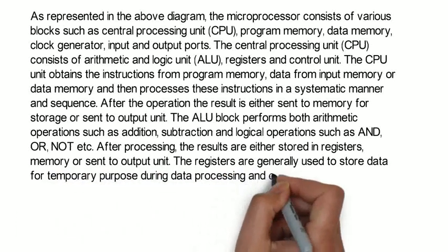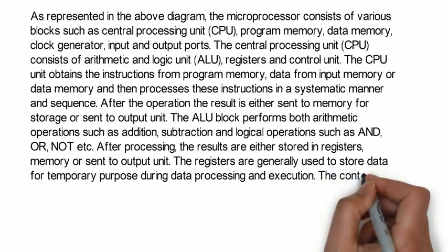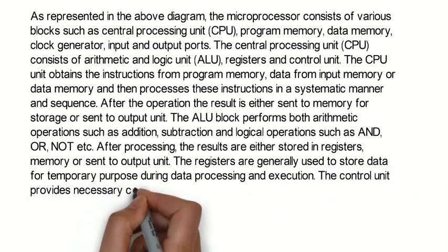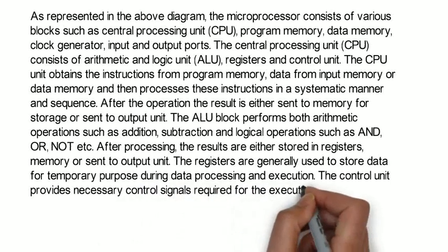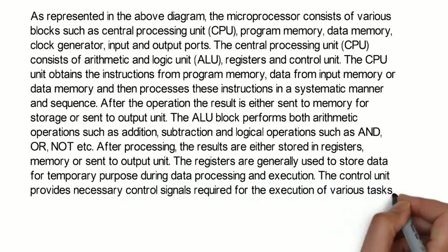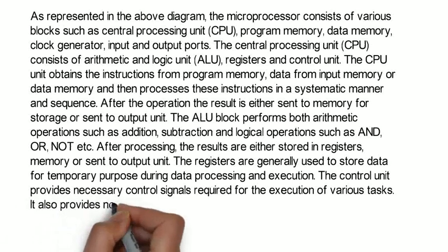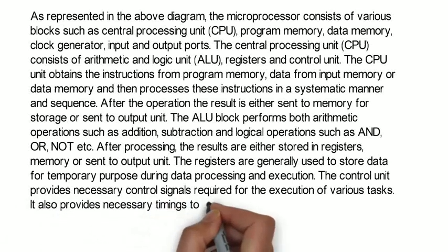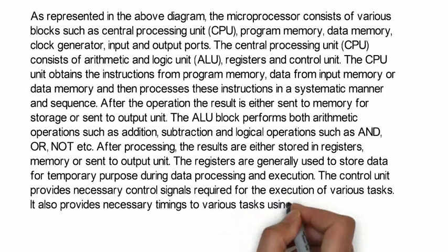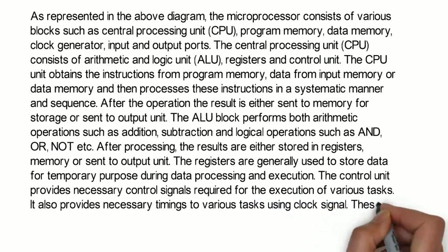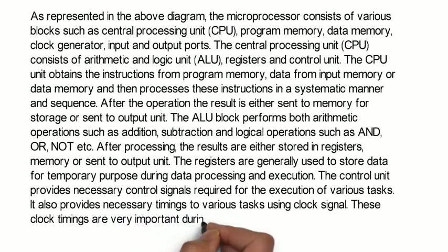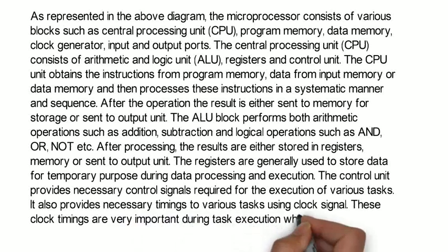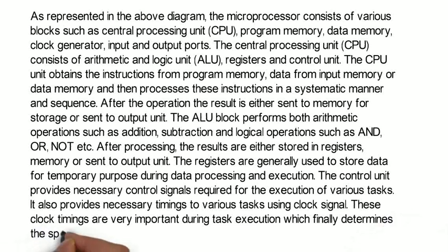The control unit provides necessary control signals required for the execution of various tasks. It also provides necessary timings to various tasks using clock signals. These clock timings are very important during task execution which finally determines the speed of the microprocessor used in a system.